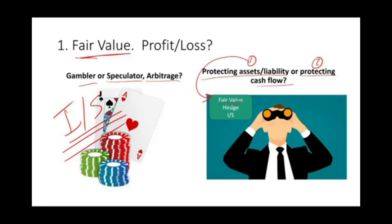If it's a fair value hedge, the adjustment of fair value goes under the income statement. If you are protecting a cash flow, then it's called a cash flow hedge, and the adjustment goes into OCI — other comprehensive income. So the fair value hedge goes into the income statement; the cash flow hedge goes into OCI. That's the big picture.